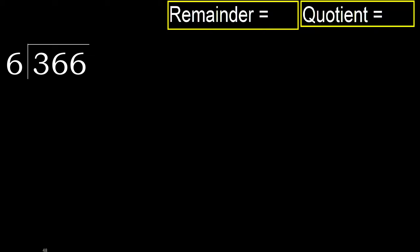366 divided by 6. 3 is less than 6, therefore move to the next digits: 36. 36 is not less than 6.